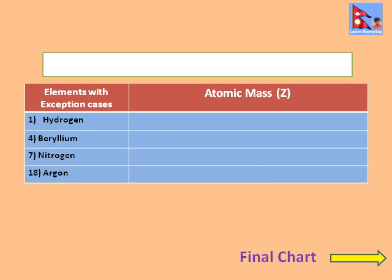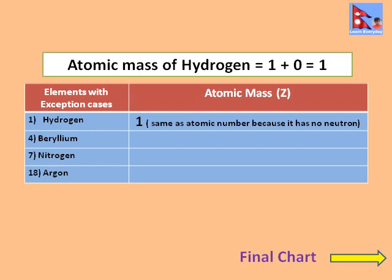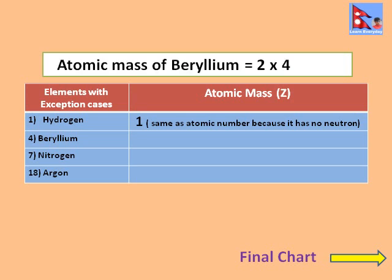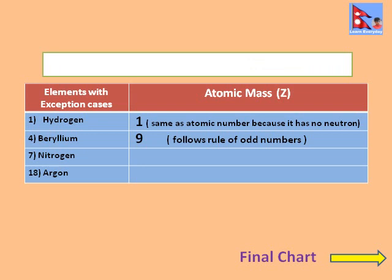Hydrogen has atomic mass 1 as it has no neutron, so its atomic mass is equal to its own atomic number, that is 1. Second one is beryllium. Its atomic mass is 9. It is because it follows the rule of odd numbers — when we multiply the atomic number of beryllium by 2 and add 1, it will be 2 × 4 + 1 = 9.